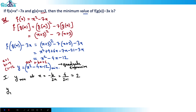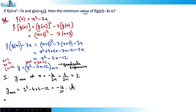So y is minimum at x equals 2. Putting x equals 2: y_min equals 2² minus 4 into 2 minus 12, which is 4 minus 8 minus 12, equals minus 16. So y minimum is minus 16. That's the answer using Method 1.